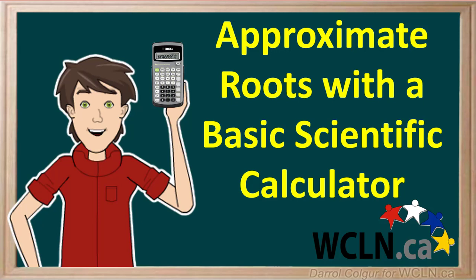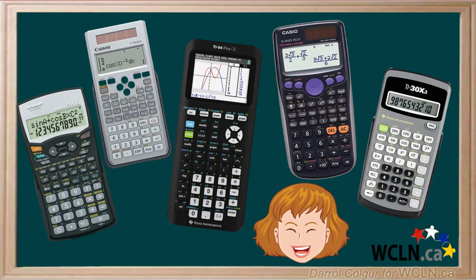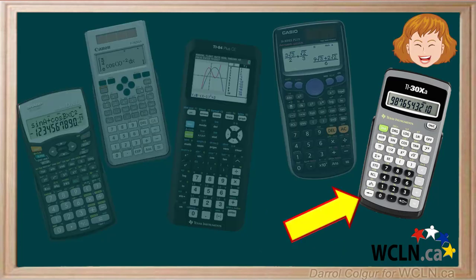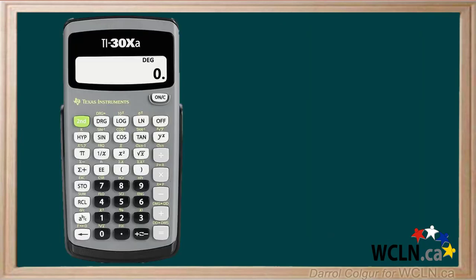Sometimes we need to find approximate roots of numbers that are not perfect squares or cubes. Luckily we have scientific calculators that can help us find the roots we need. This is the most basic scientific calculator, but it still works well for finding roots. Even though this is the most basic model, you can easily find all the roots you need using this. However, if you use a different type of calculator and you're not interested in how this one works, skip this video and go to a video that deals with the type of calculator you have.